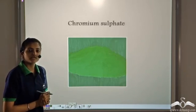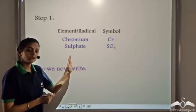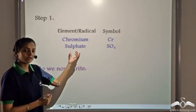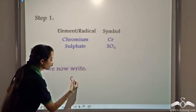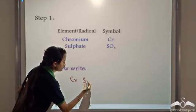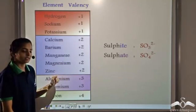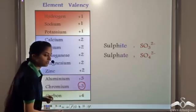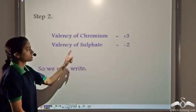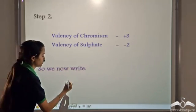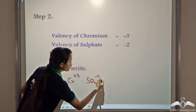Now let's write the formula of chromium sulphate step by step. First, write the element and radical: chromium and sulphate. Then check the valencies: chromium has +3 valency and sulphate has -2 valency. The third step involves interchanging the valencies. We write Cr and SO4, ignoring the positive and negative signs, then interchange: the superscript of one becomes the subscript of the other.